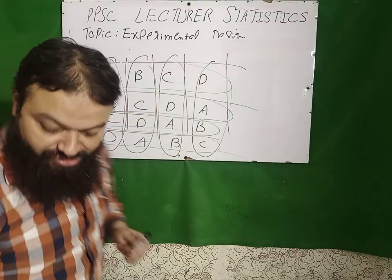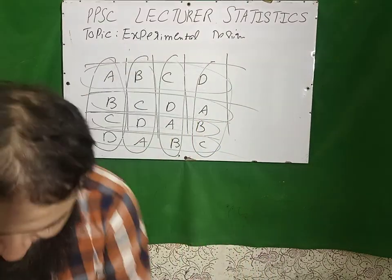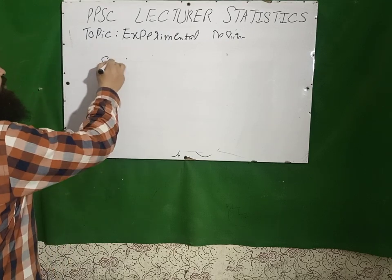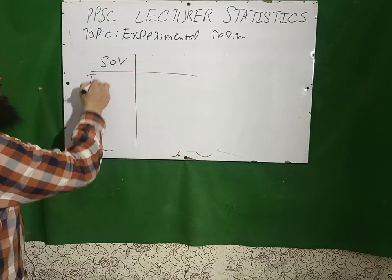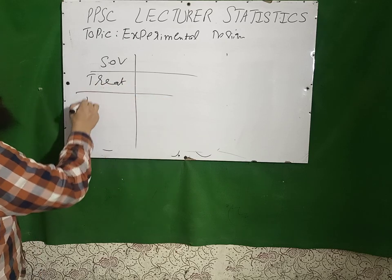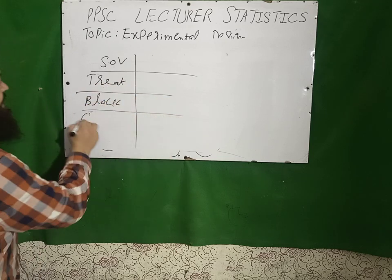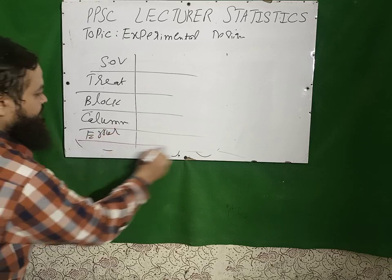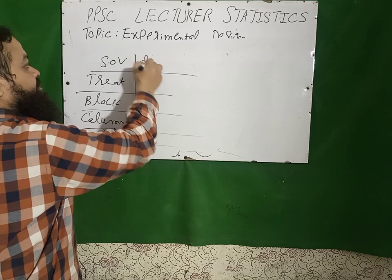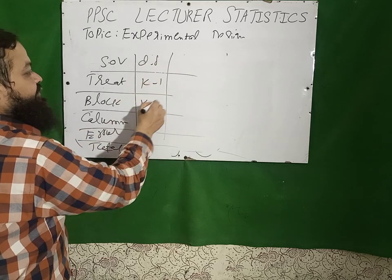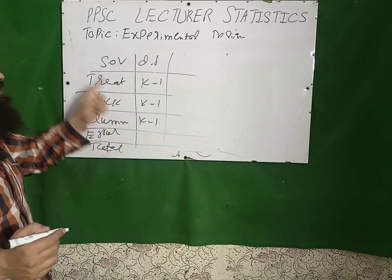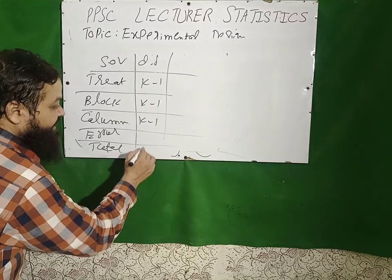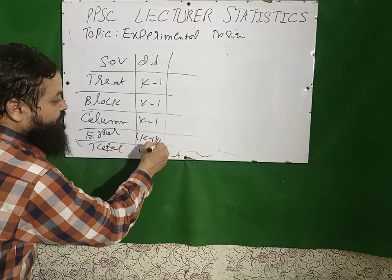Latin square design controls two sources of variations. Now I will tell you the ANOVA table for this. The sources of variation are: treatment, block, column, error, and total. The degree of freedom for treatment will be K-1. A very important point: the degree of freedom for treatment, block, and column in Latin square is the same — it is equal to K-1. For total that will be K²-1, and for error that will be K-1 into K-2.